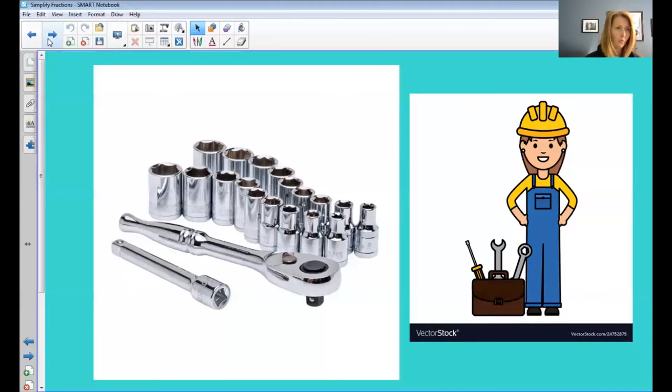So why would they all not be marked as sixteenths of an inch when they are all one-sixteenth larger than the next closest size? It's because some of these fractions, in fact all of these fractions on these sockets, have already been simplified.